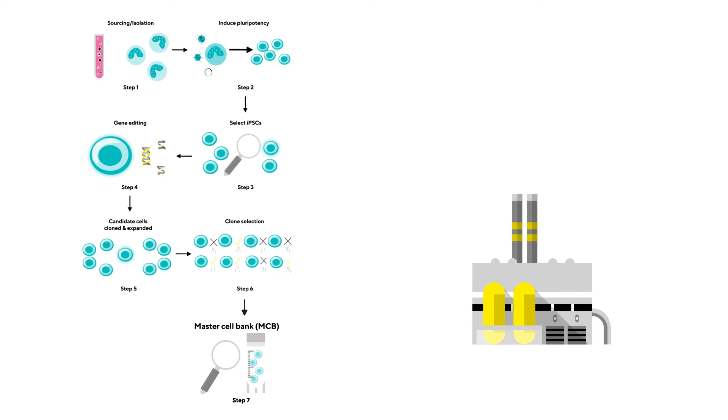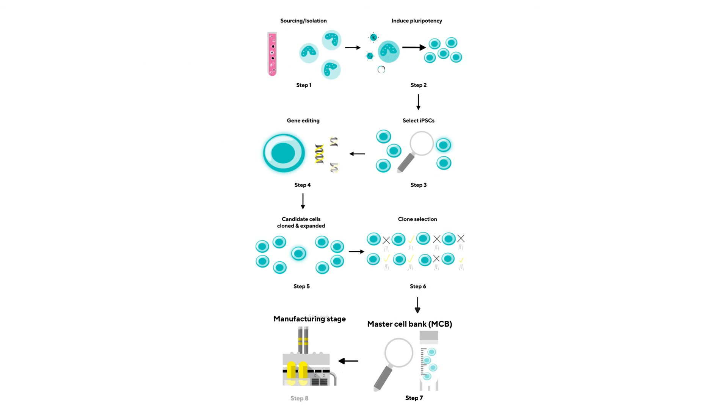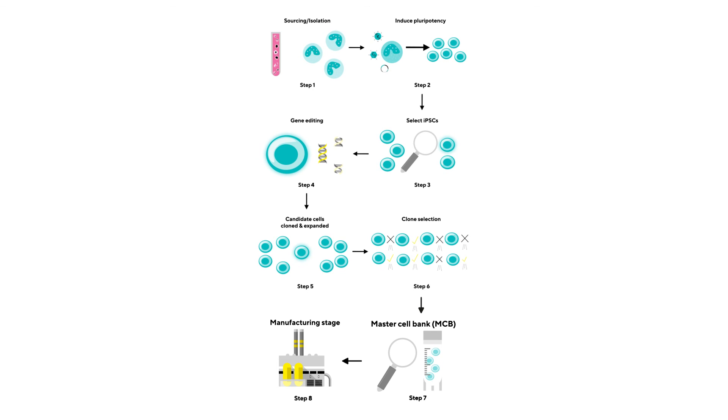The cells are now ready for the manufacturing stages of the pipeline, including further expansion, harvesting of final iPSCs, characterization, QC, and finally, storage via cryopreservation, ready for them to be used as the base cells to differentiate into your specific cell type for your cell therapy.